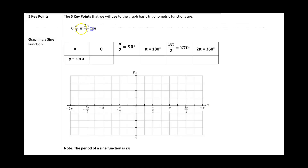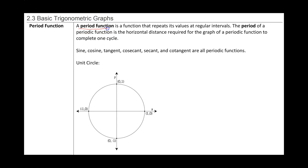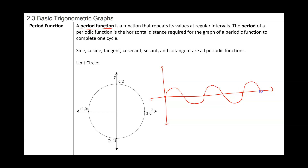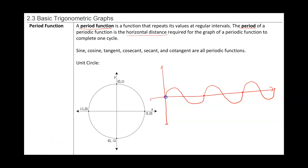First off, let's talk about a periodic function. A periodic function is a function that repeats its values at regular intervals. For example, here's a function that takes a certain shape and then keeps repeating that same shape over and over again. The period of a periodic function is the horizontal distance required for the graph to complete one cycle — one cycle being when we end up back at the same point.